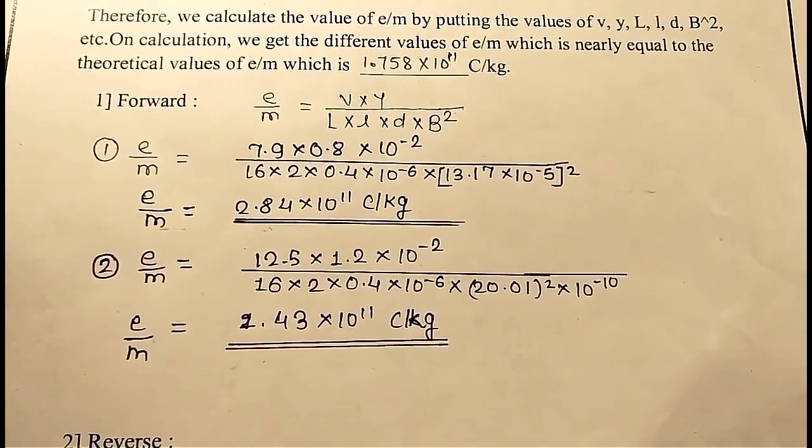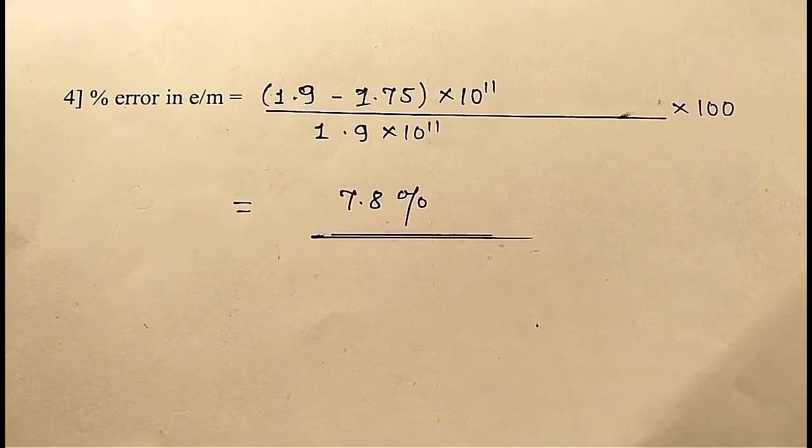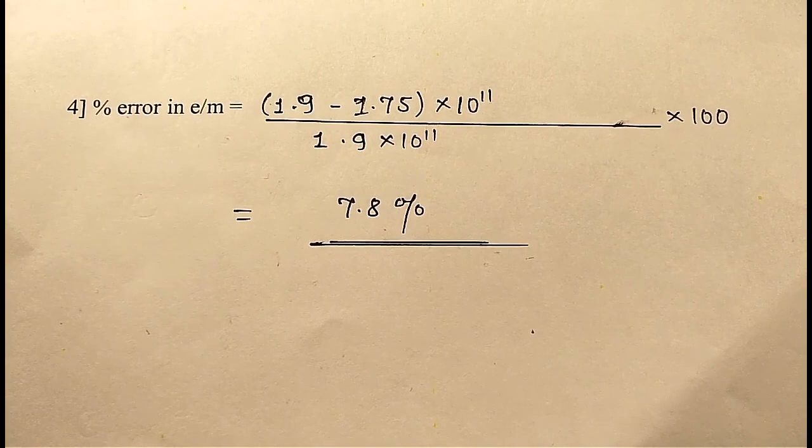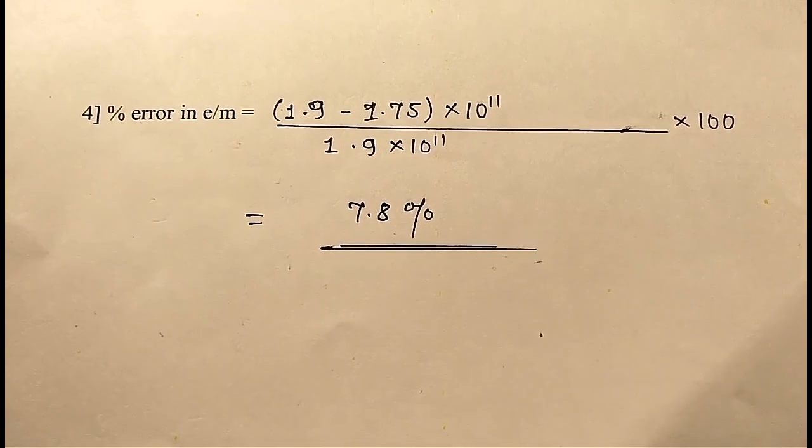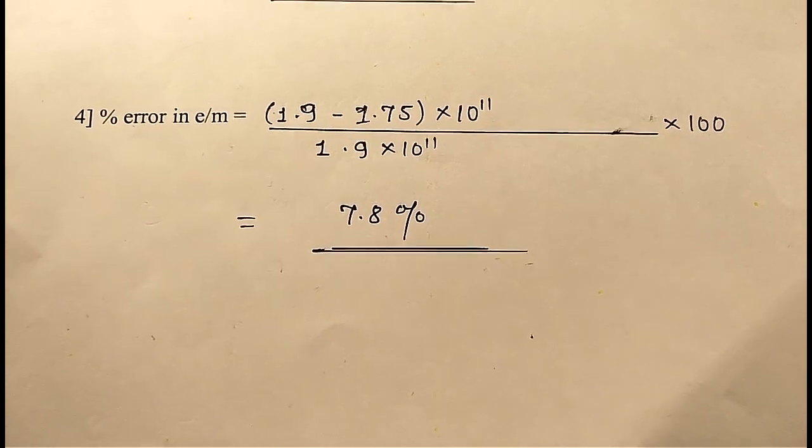On calculation, we get the different values of E by M which is nearly equal to the theoretical values of E by M, which is 1.75 into 10 raised to the power 11 Coulomb per kg.